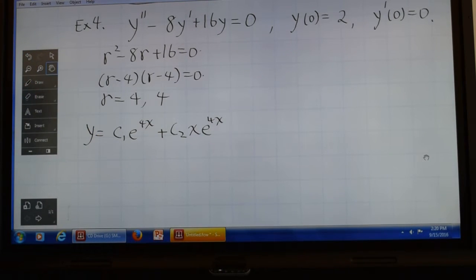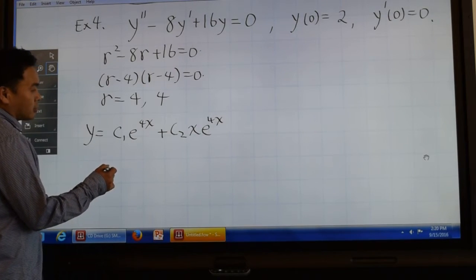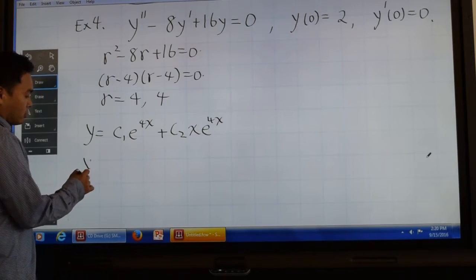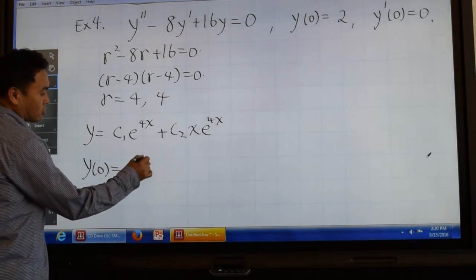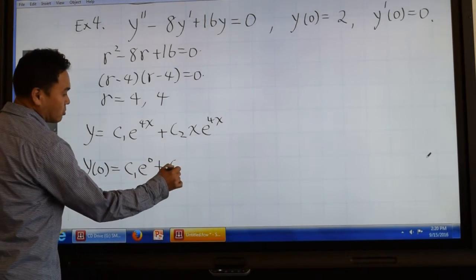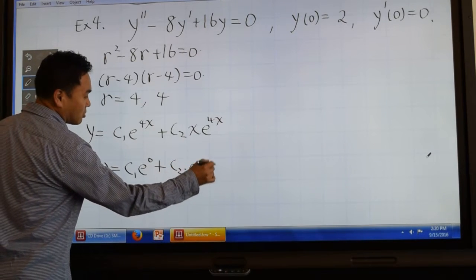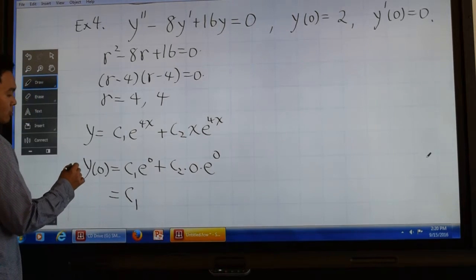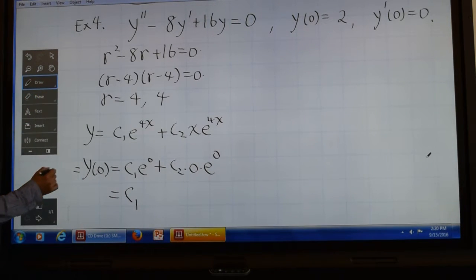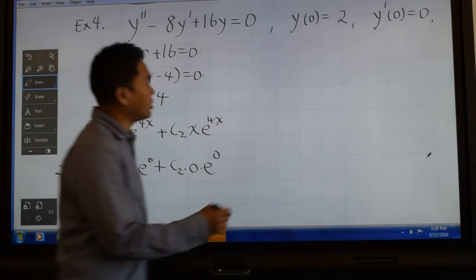And then we can plug in 0. y of 0 is c1 times e to the 0th power, and c2 times 0 times e to the 0th power, so that's just c1 itself. But what is y of 0? 2. So we have that c1 has to be 2.